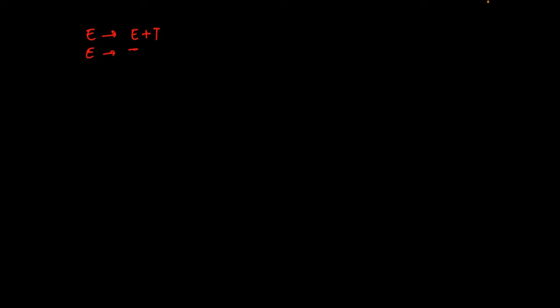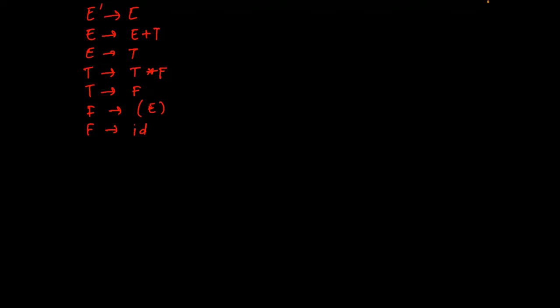The grammar has productions: E to E plus T, E to T, T to T multiplication F, T to F, F to opening bracket E closing bracket, F to id. The first thing we have to do is augment this grammar — we add a new starting symbol E-dash which points to the current starting symbol E. Then we calculate the closure for the first production rule.